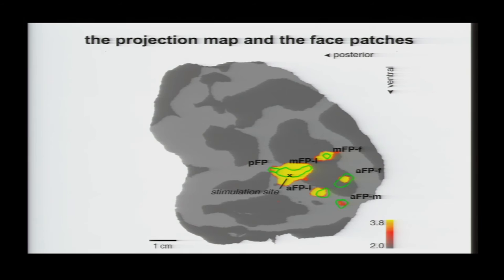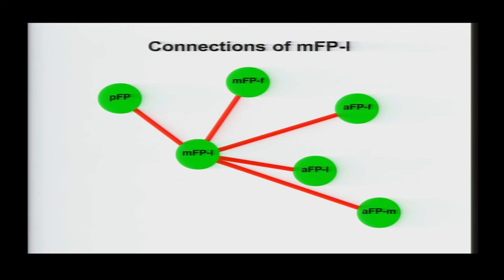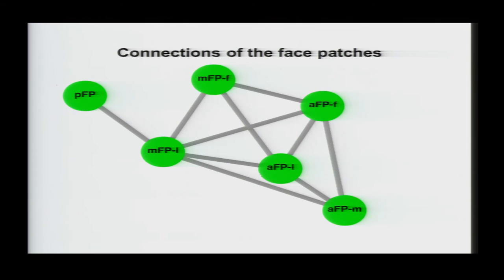So this shows that the middle face patch on the lower lip of the FTS is connected to all five other temporal patches. And Sebastian repeated this experiment in each of the face patches. And in each case, what he found was that the face patch was strongly connected to the other face patches, but not to the surrounding cortex. So this shows that the system of patches really forms a unified system for face processing.